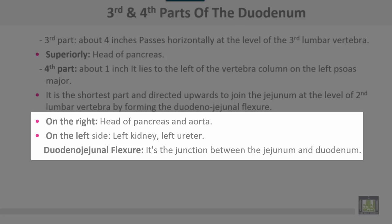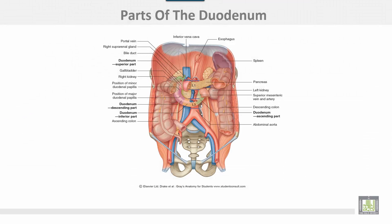On the left side are the left kidney and the left ureter. The duodenojejunal flexure is the junction between the duodenum and the jejunum. This shows the C-shaped duodenum with the first, second, third, and fourth parts enclosing the head of the pancreas in the concavity.